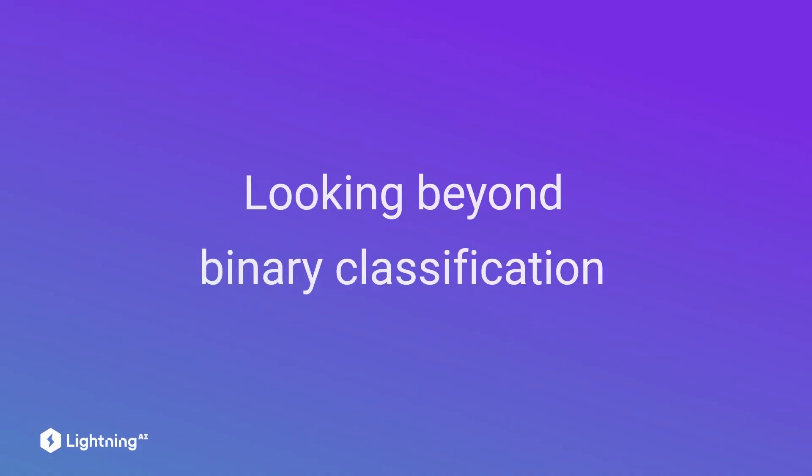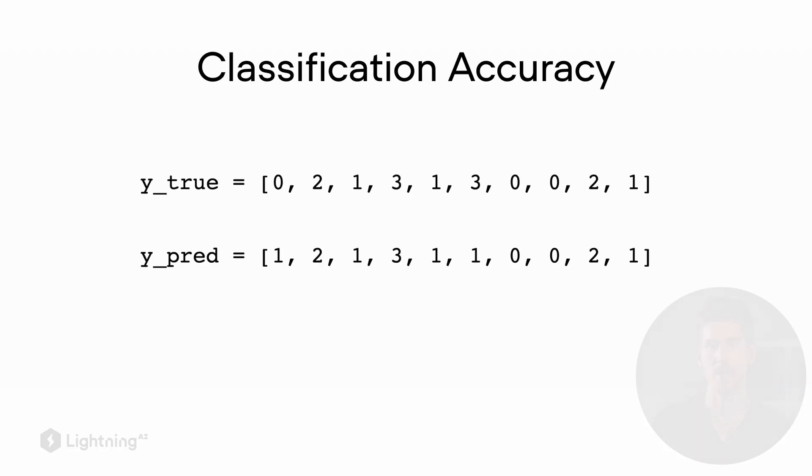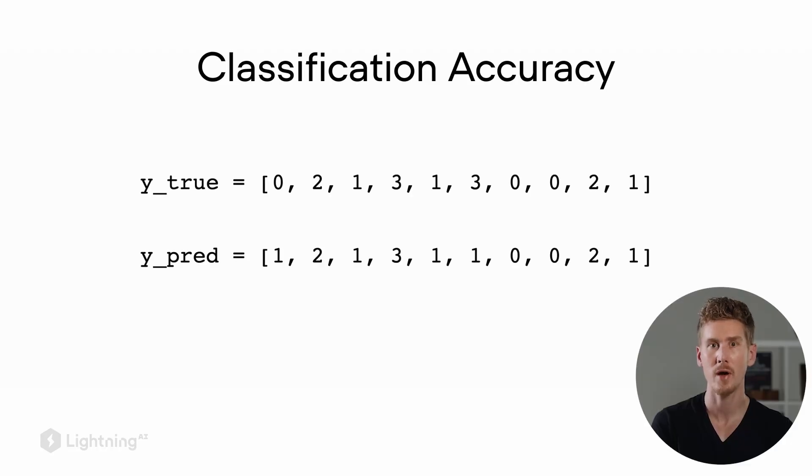Now, we talked a lot about binary classification problems, but how can we evaluate the performance of models trained on more than two classes? So for example, consider this dataset where we have now four different class labels 0, 1, 2, and 3.